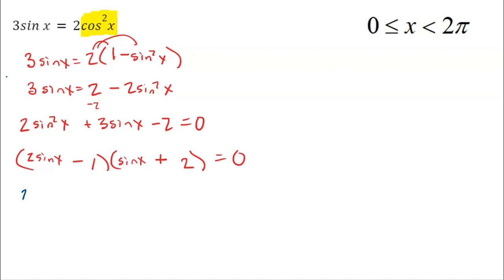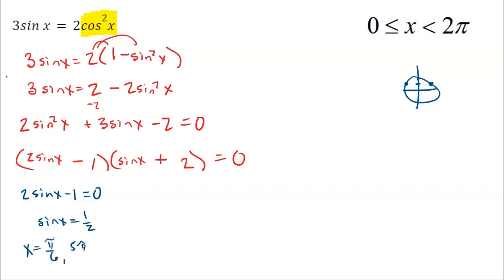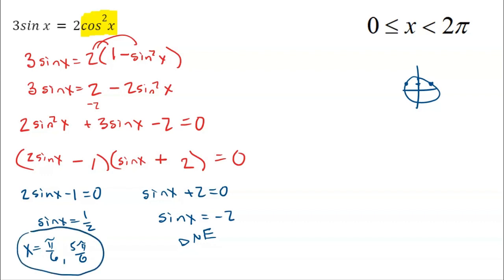Now I'm going to use the zero product property. 2 sine of x minus 1 equals 0 means sine of x equals 1/2. Draw a little circle if you have to — where is sine 1/2? That happens at π/6 and 5π/6. The second equation is sine of x plus 2 equals 0, so sine of x equals negative 2 — but that does not exist because sine of x is not allowed to be lower than negative 1. So this equation only has two answers: π/6 and 5π/6.